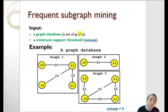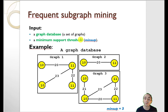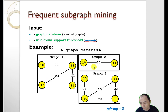In the basic problem, we have a graph database — a set of graphs. Here I have a database of three graphs, and I need to set a parameter called the minimum support to analyze this. The minimum support means I want to find the subgraphs that appear in at least, say, three of these graphs from my database. This is a parameter that the user needs to set. So I want to find everything that appears at least three times across three graphs in this database.